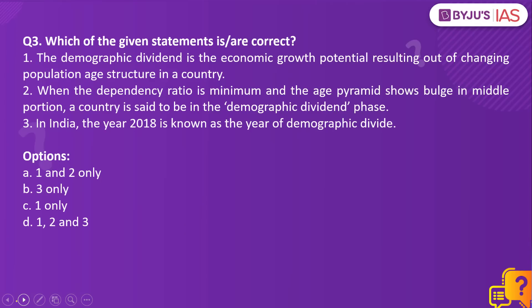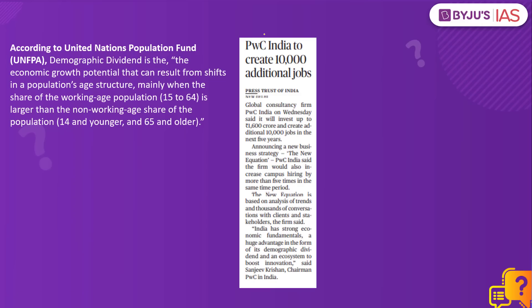Now let us take up question number three: which of the given statements is or are correct? The demographic dividend is the economic growth potential resulting from a changing population age structure in a country. When the dependency ratio is minimum and the age pyramid shows a bulge in the middle portion, the country is said to be in a demographic dividend phase. In India, the year 2018 is known as the year of demographic divide. This question is based on an article in The Hindu about PWC India, a global consultancy firm, creating 10,000 additional jobs, with its chairman citing India's demographic dividend.